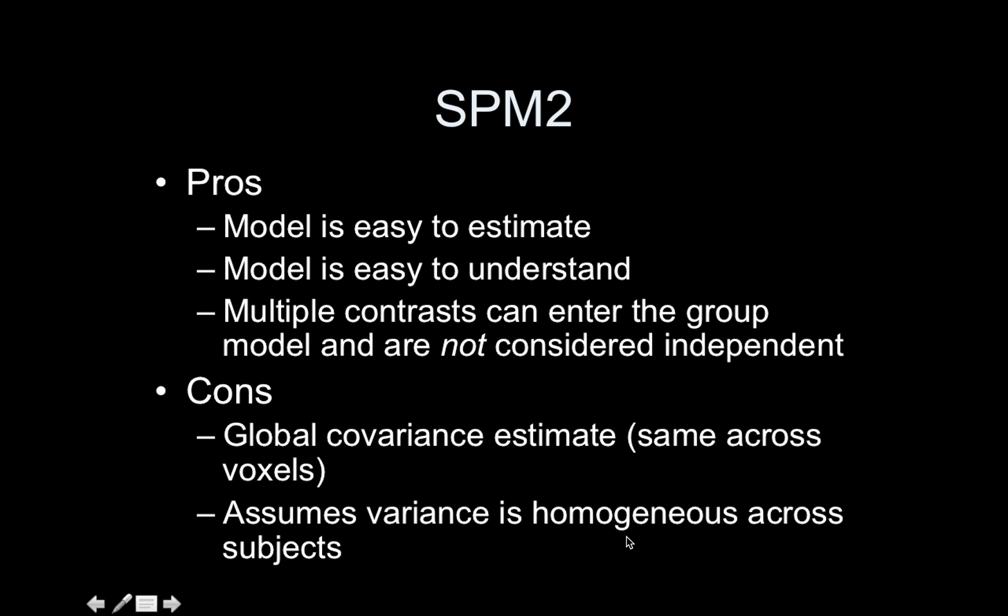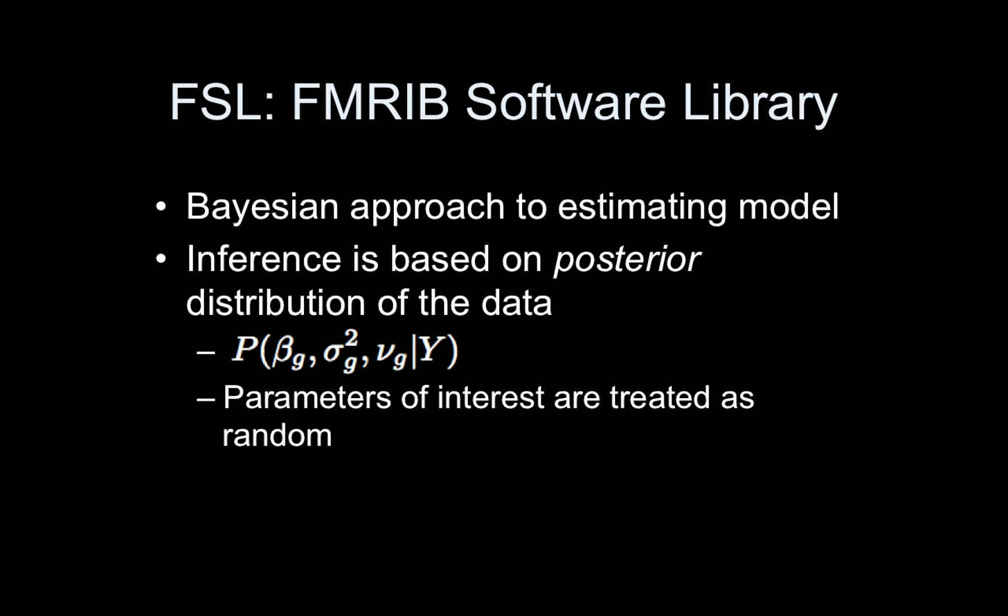FSL—the FMRIB Software Library—uses a Bayesian approach to estimating the model. Inferences are based on a posterior distribution, so it's focusing on the probability of the parameter values given the data as usual.